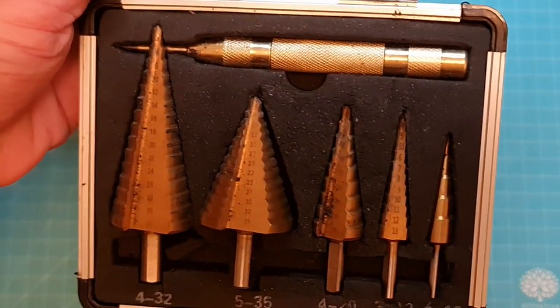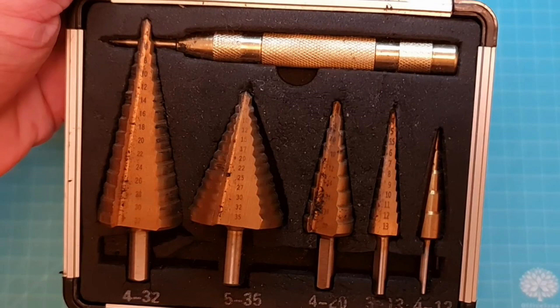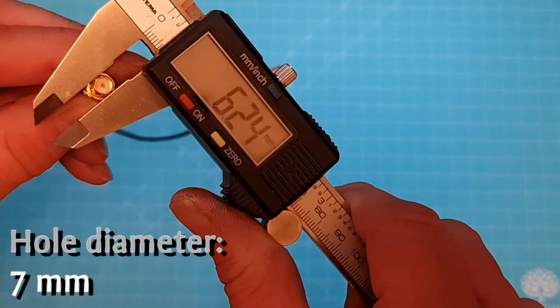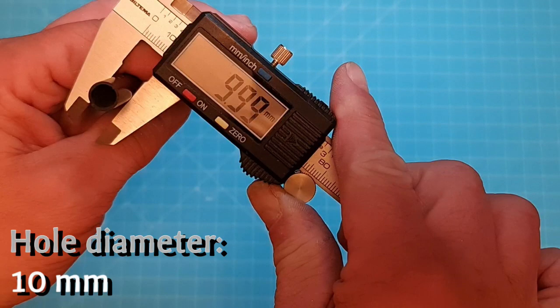To make perfect round holes, such a kit with cone drill bits and measured hole diameters comes very handy. But first of all, we need to make some measurements. For the antenna socket 6.24, I will use a 7 mm hole. For the backlights, a 10 mm hole will be perfect. For the handle, a 10 mm hole is also a good choice.